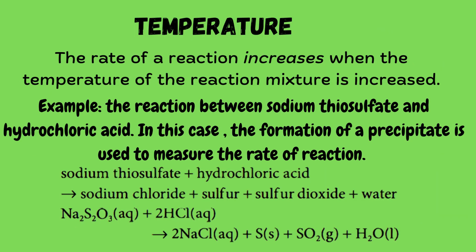The next factor is temperature. The rate of a reaction increases when the temperature of the reaction mixture is increased. Example: the reaction between sodium thiosulfate and hydrochloric acid, where the formation of a precipitate is used to measure the rate of reaction. Sodium thiosulfate plus hydrochloric acid gives sodium chloride plus sulfur plus sulfur dioxide and water.